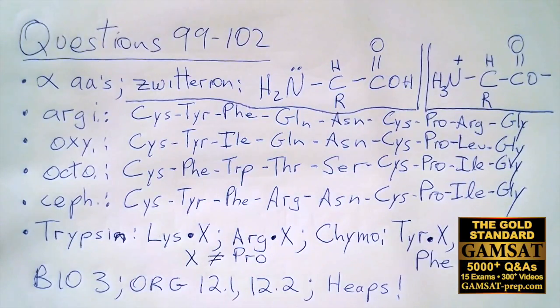The next thing they allude to is the zwitterion state. It's not important in this question but I just want to show it to you because it can come up on other GAMSAT exams. Although many textbooks might draw an amino acid like this as a generic neutral structure, this never exists at any pH.